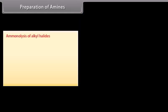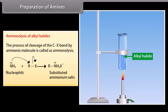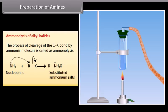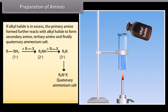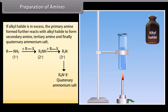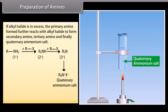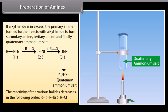Ammonolysis of alkyl halides: The process of cleavage of the C-X bond by ammonia is called ammonolysis. If alkyl halide is in excess, the primary amine formed further reacts with alkyl halide to form secondary amine, tertiary amine, and finally quaternary ammonium salt. The reactivity of the various halides decreases in the order: RI > RBr > RCl.